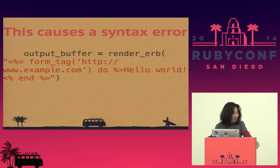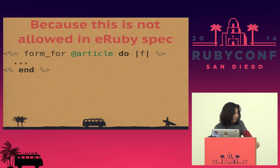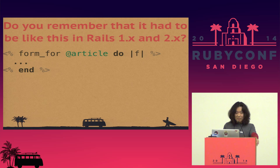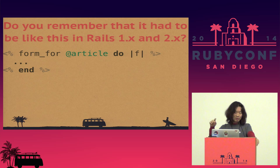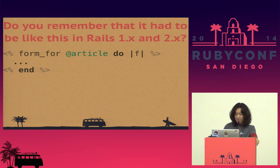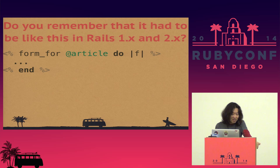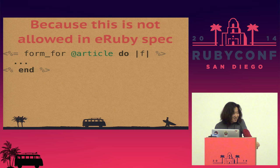Why doesn't it work? Because this syntax is not allowed in the eRuby spec. Before Rails 3, you couldn't add an equals sign in front of form_for, link_to with block, or any method that takes a block. The right way to call a method with a block in the eRuby spec is the older style. But Rails somehow allows the newer syntax — it's magic. Let's dig into the magic.